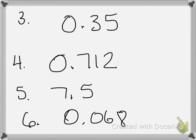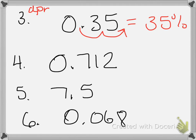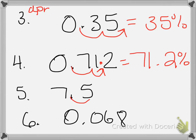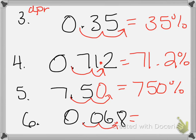For numbers 3, 4, 5, and 6, it says to write each decimal as a percent. This is probably the easiest material you'll do. You're going from decimal to percent, so you go right — DPR, decimal to percent right. That means you move the decimal two spaces right. So the answers should have been: 35%, 71.2%, 750% (adding a zero for the empty place), and 6.8%. Just by remembering 'decimal to percent right, percent to decimal left,' you should have gotten an easy six points.